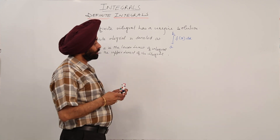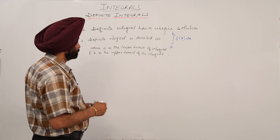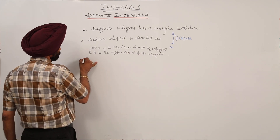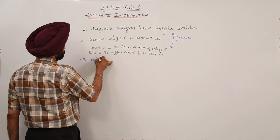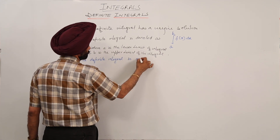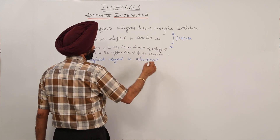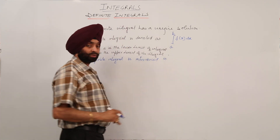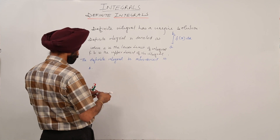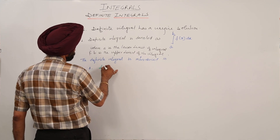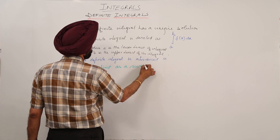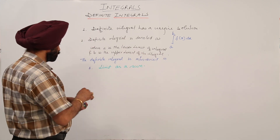Now, the main thing is how the definite integral is introduced. It is introduced basically in two different ways. Number one is called 'Limit as a Sum' — that is the heading of the first approach.